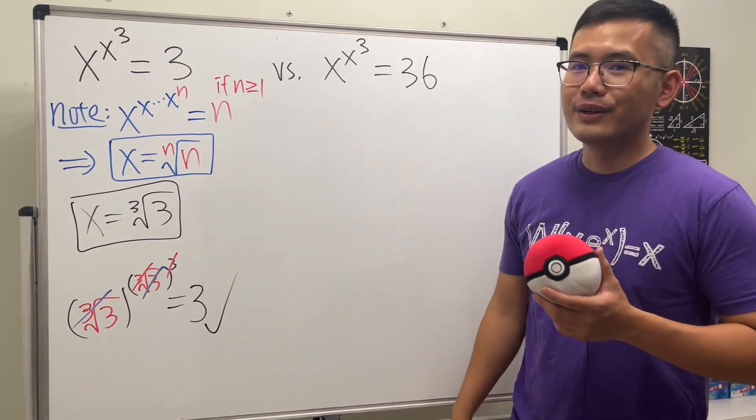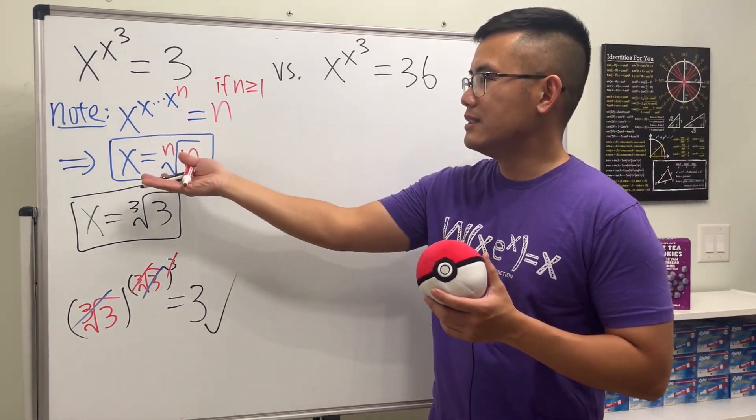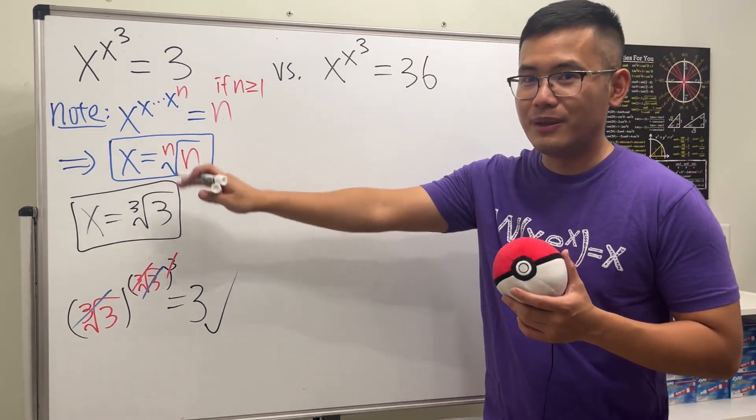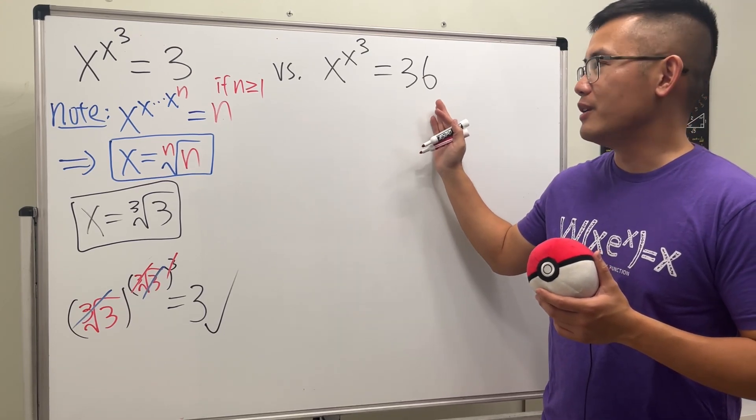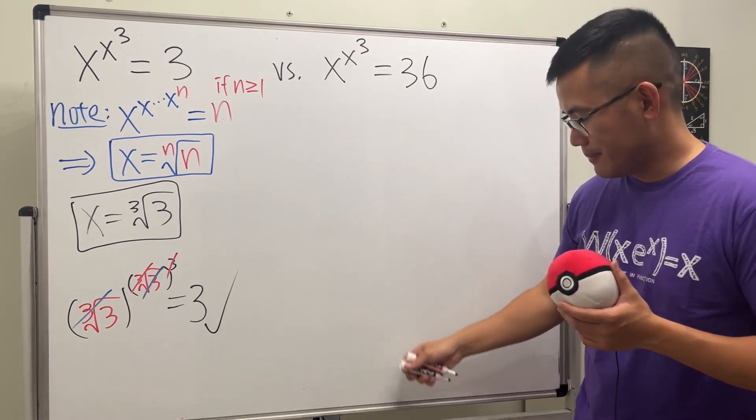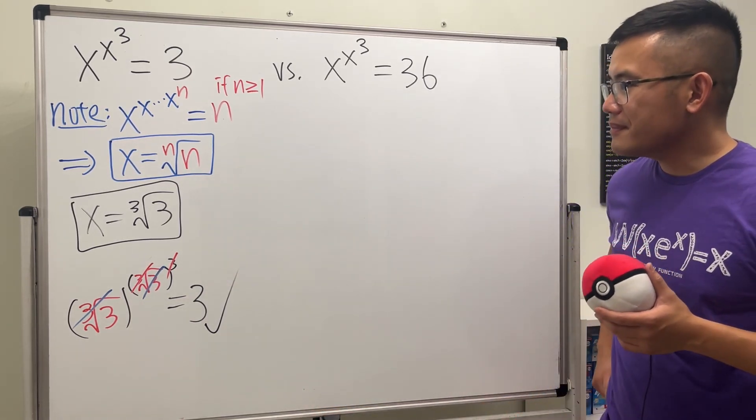So right here we have a three for the power for this, and this is the cube root, so this three and the cube root cancel. Therefore we just get this three, which is exactly what we want. It checks. I know I didn't really solve it. I just tell you guys this is the quick way to do it because you should know this, it's really famous.